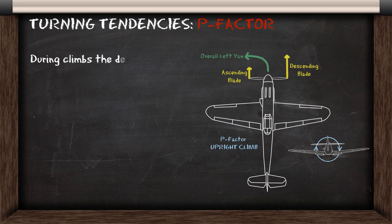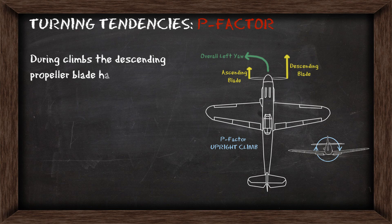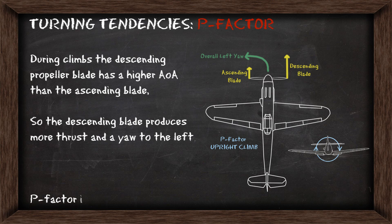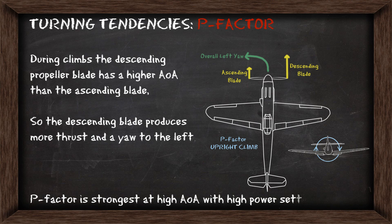For p-factor, during climbs the descending propeller blade has a higher angle of attack than the ascending blade. This means the descending blade produces more thrust and causes a yaw to the left. P-factor is strongest at high angle of attack with high power settings.